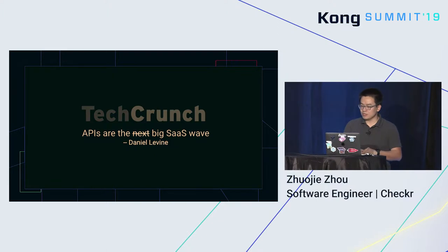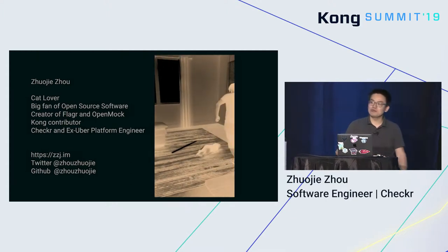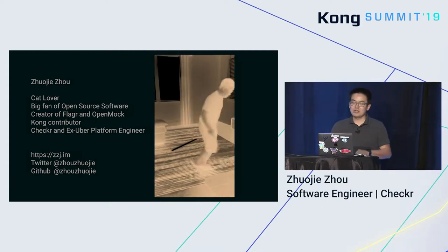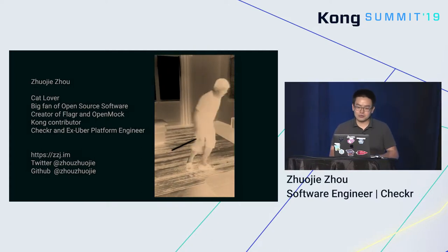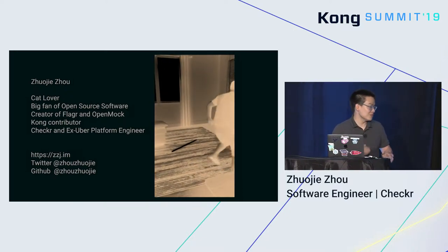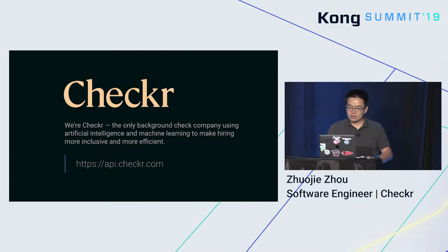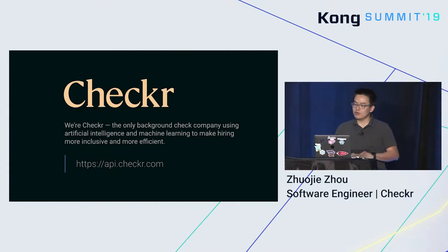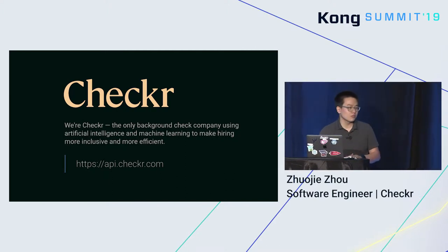Before we jump into the content, let me briefly introduce myself. Obviously I'm a cat lover. I'm a super big fan of open source. I'm the creator of Flagger and OpenMock — if you Google them, these are open source tools we created and used in our internal services. I'm also a proud Calm contributor, although it's just a few one-liner changes. I currently work at Checkr and previously at Uber.